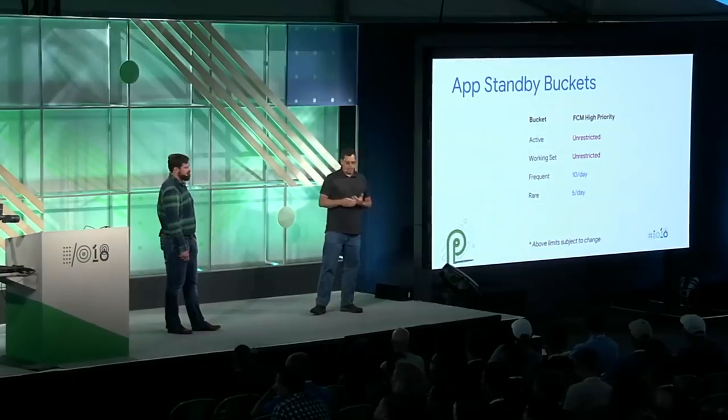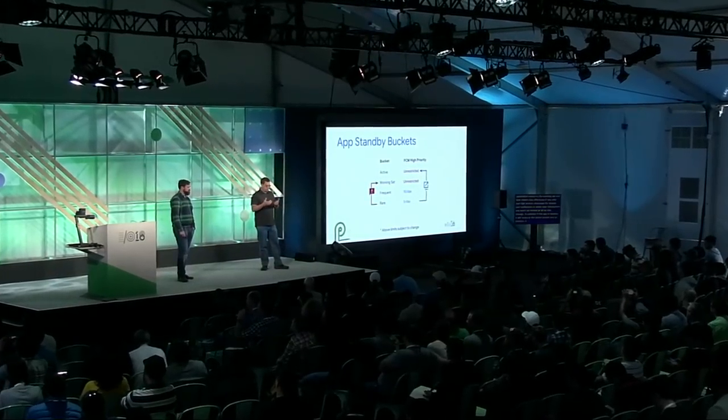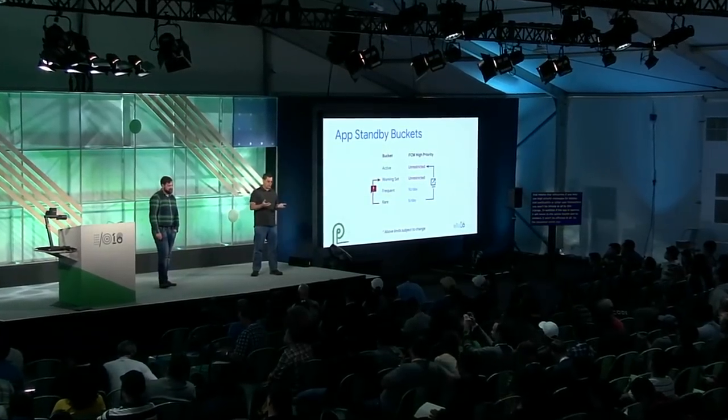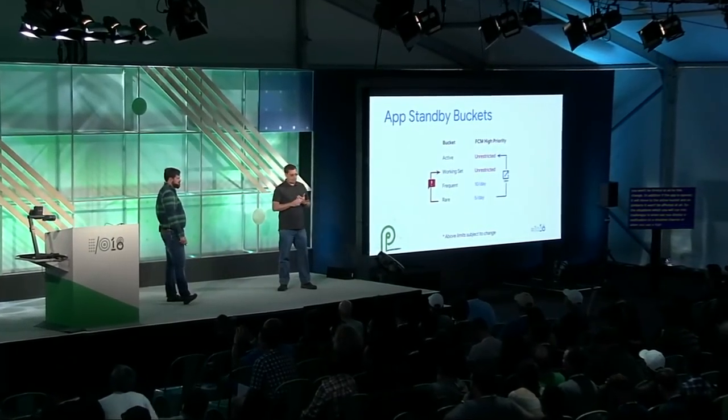This table shows App Standby Buckets and their impact on high-priority messages. Messages have different quotas for different buckets — if you're in the rare bucket, you're only going to get five messages per day. If you exceed that amount, the messages will be delivered as normal priority. However, if you display a notification, your application moves to the working set. This means that if you only use high-priority messages for displaying a notification or other user interactions, you won't be limited at all by this change. Similarly, if the app is opened, it moves to the active bucket and won't be affected. The situations where you'll run into challenges are when you display a notification to a disabled channel or use a high-priority message to trigger background work.